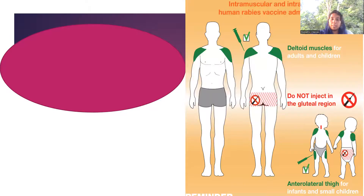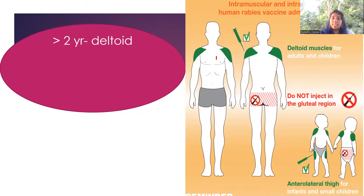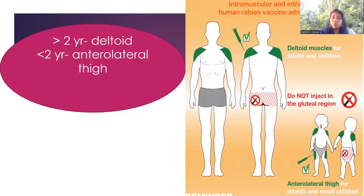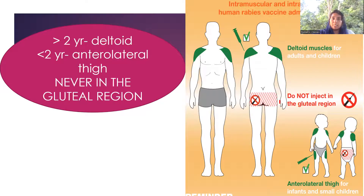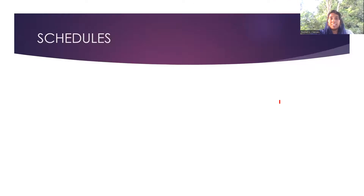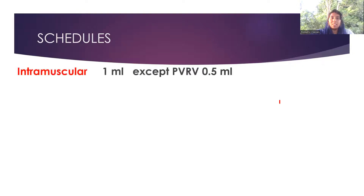From the WHO guidelines diagram — for adults and children more than two years, the vaccine is administered in the deltoid area. For smaller children, it is given in the anterolateral thigh. Never administer the rabies vaccine in the gluteal area. Intramuscular dose is 1 ml except for PVRV which is 0.5 ml.